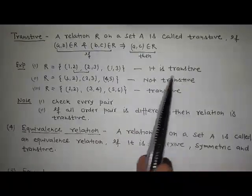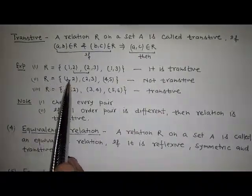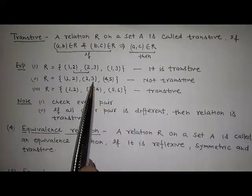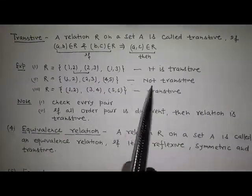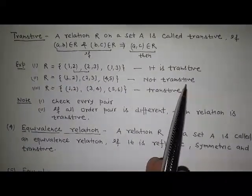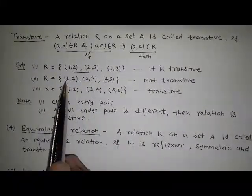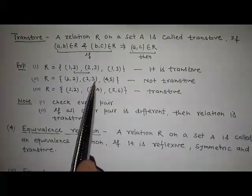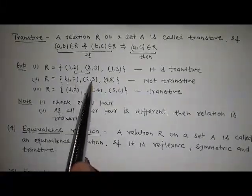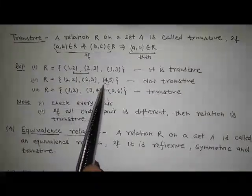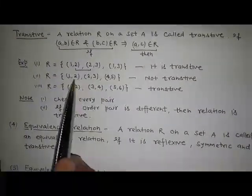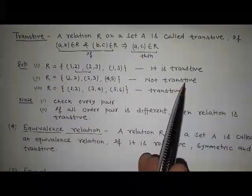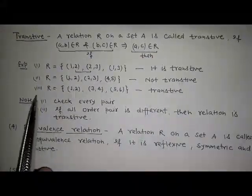Second example: {(1,2), (2,3), (4,5)} is not transitive because (1,2) is present and (2,3) is present, so it must have (1,3) also, but (1,3) is not present here. That's why it is not transitive.